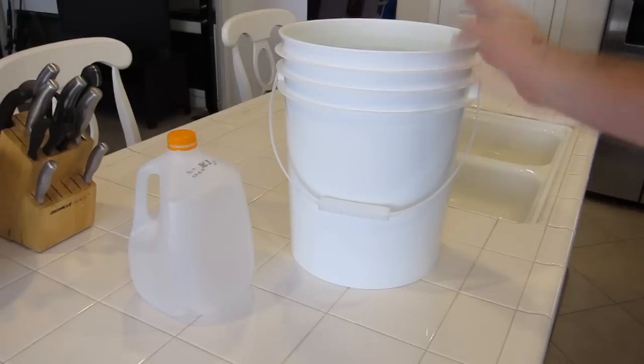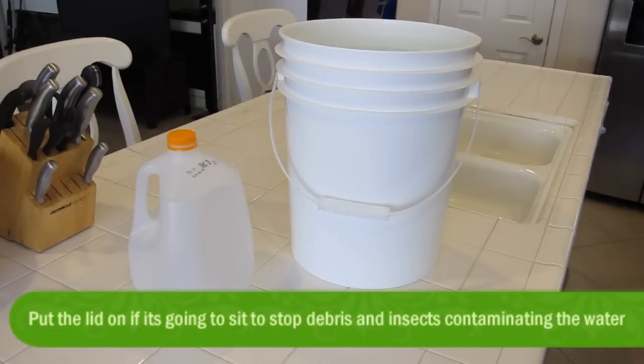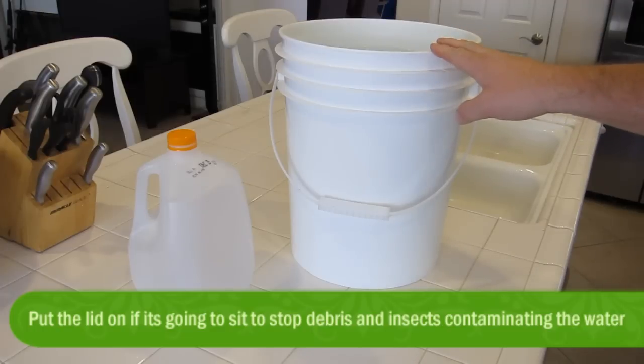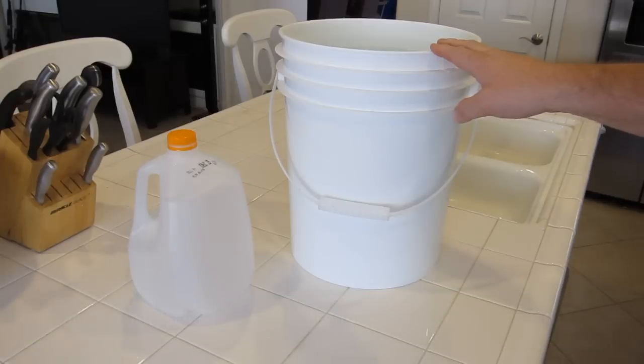First of all, you can just put it to one side and let it sit there, and the chlorine will evaporate over the course of 24 hours. So it's a case of just thinking ahead, filling up your water the day before you want to start, leaving it somewhere cool and dark, and just let it evaporate. Another way you can do it is to accelerate the process by using an air pump and an air stone.